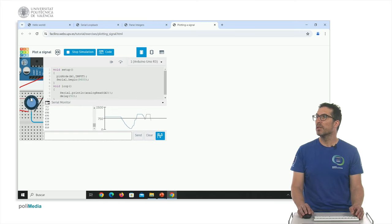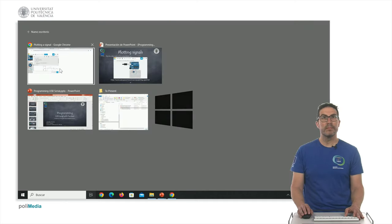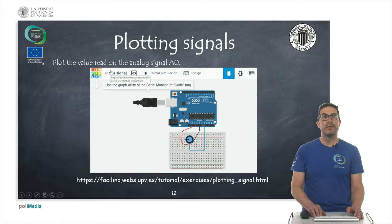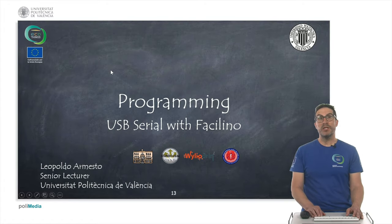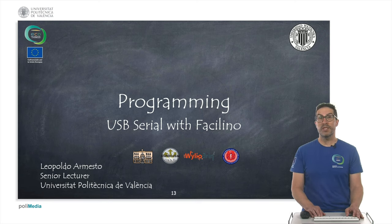This is the maximum, this is 5 volts, and this is 0 volts. And any value in between, it's read as a number between 0 and 1223, but here plotted as a signal that varies over time. In this presentation, I have introduced how to use the serial port instructions in Fazlino. Thank you very much.